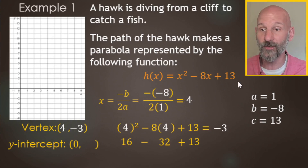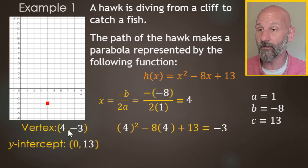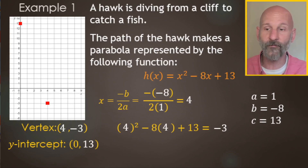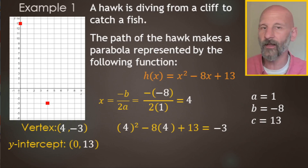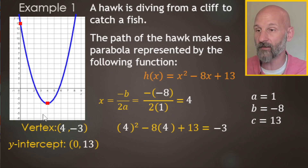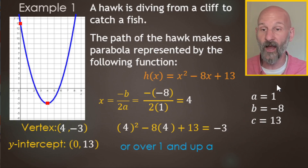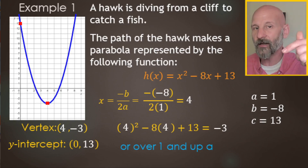The y-intercept is just your c term, which is 13, so the y-intercept is (0, 13). Now we're ready to graph. The vertex is at (4, −3) and the y-intercept is at (0, 13). If you need another point, you can use the reflected y-intercept on the other side of the axis of symmetry. You can also use the a value: go over one and up one from the vertex in either direction. That gives you your second and third points.